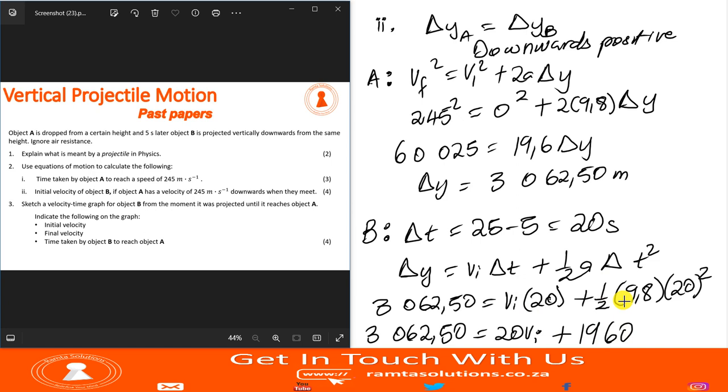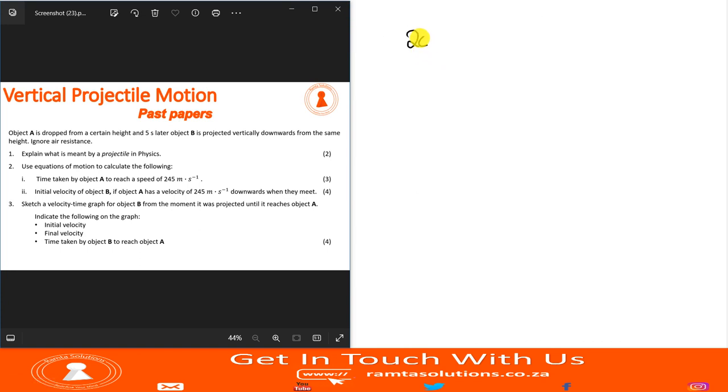Let's see now. 4.9 times 400, times 20 squared, is 1960. It's plus 1960. Now, 3062.5 minus 1960, what is our answer? It is 1102.5.